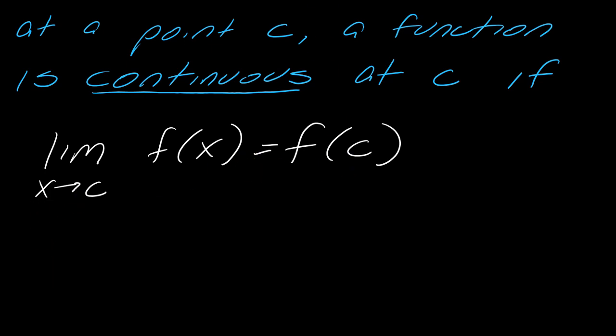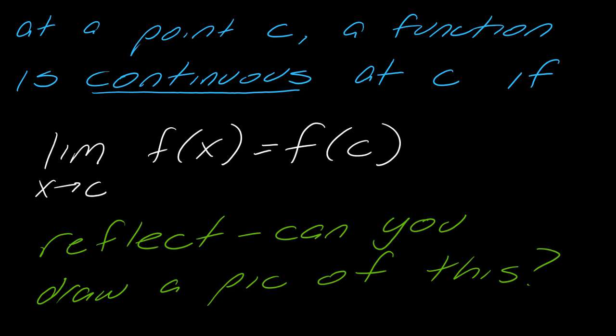A function is continuous at a point C if this is true: the limit as x approaches C of f of x equals f of C. Here's where you want to engage with this video — can you actually draw a picture of this? If you're using the guided notes, I actually left some space on the next page for that. Highly recommend you pause the video here and just see if you can wrap your head around what this actually means. Hit play when you're ready.